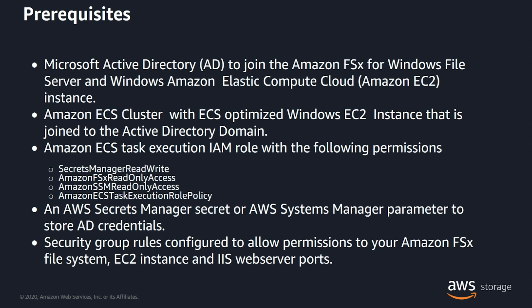Before we get started, let's look at some of the prerequisites required for this demo. We will need a Microsoft Active Directory to join the FSx file server and your Windows EC2 instance. An Amazon ECS cluster with an ECS-optimized Windows EC2 instance joined to this Active Directory domain, and an ECS Task Execution IAM role with the required permissions. We also need an AWS Secrets Manager secret or AWS Systems Manager parameter store to store the Active Directory credentials. Please make sure your security group rules are configured to allow permissions to your FSx file system, EC2 instance, and the IIS web server ports.